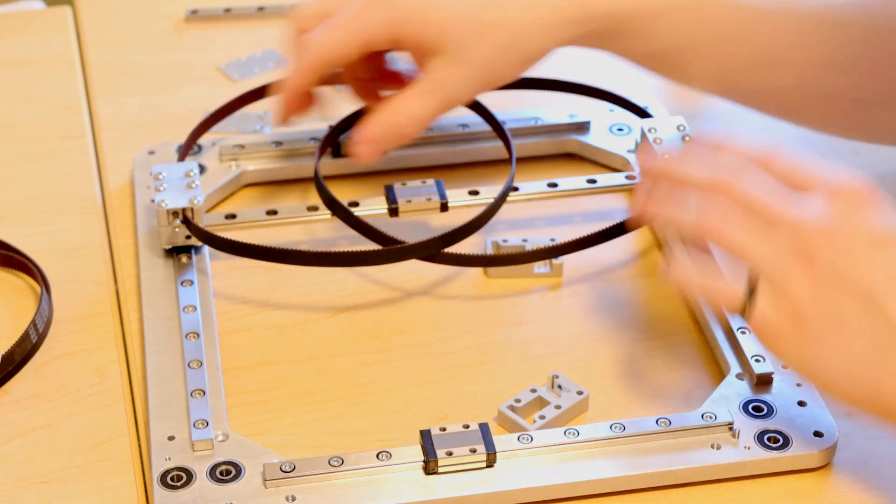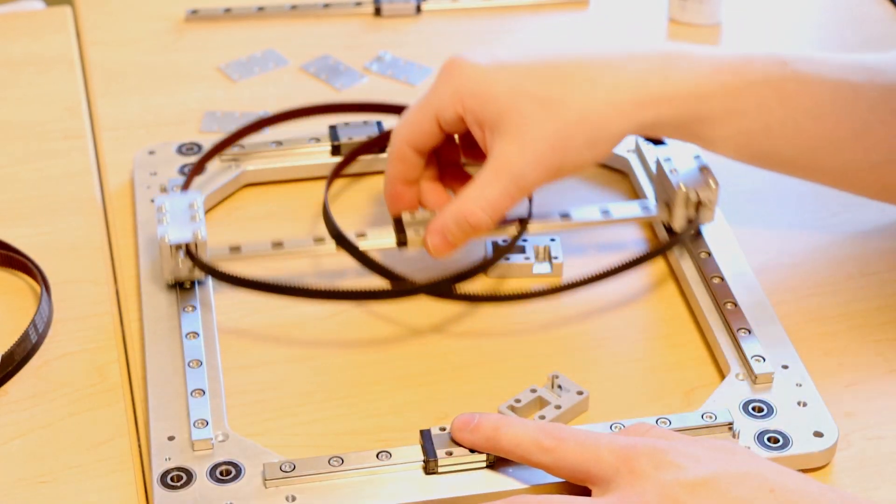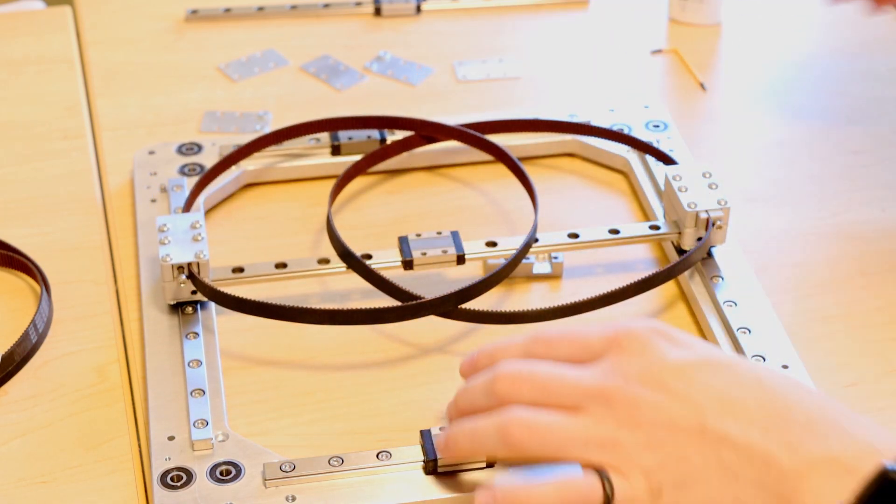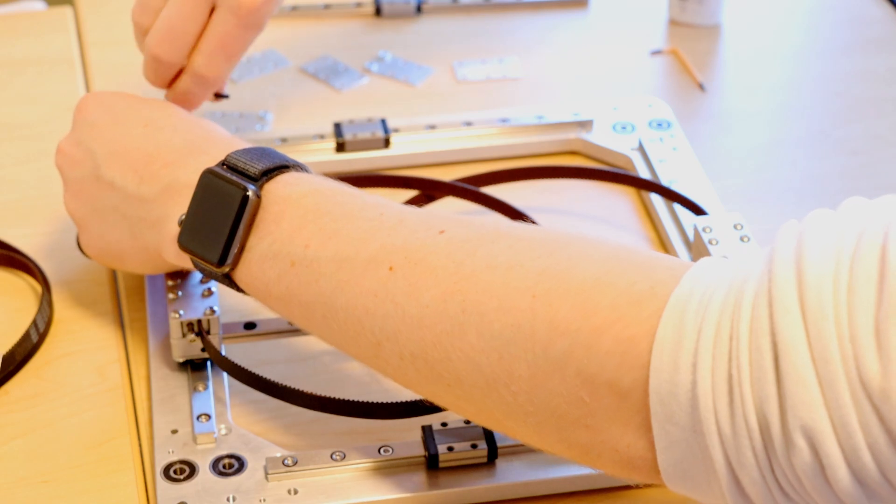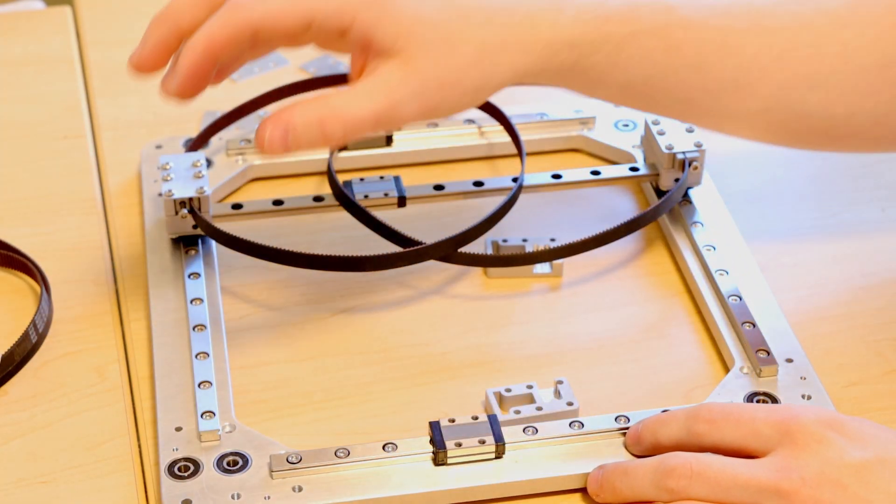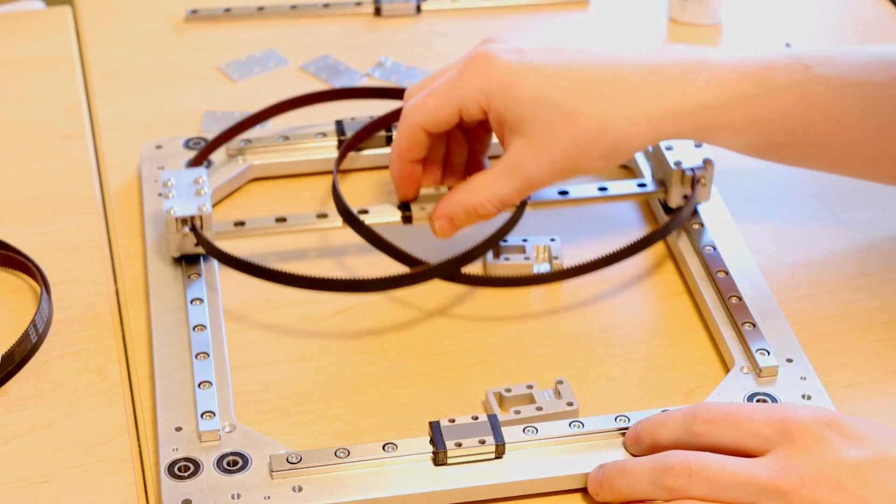Now that both towers are tight we can begin to actually tighten the rail down and kind of move this back and forth gradually as we do it to make sure that there's no binding. So this rail is pretty much all the way tightened down now.